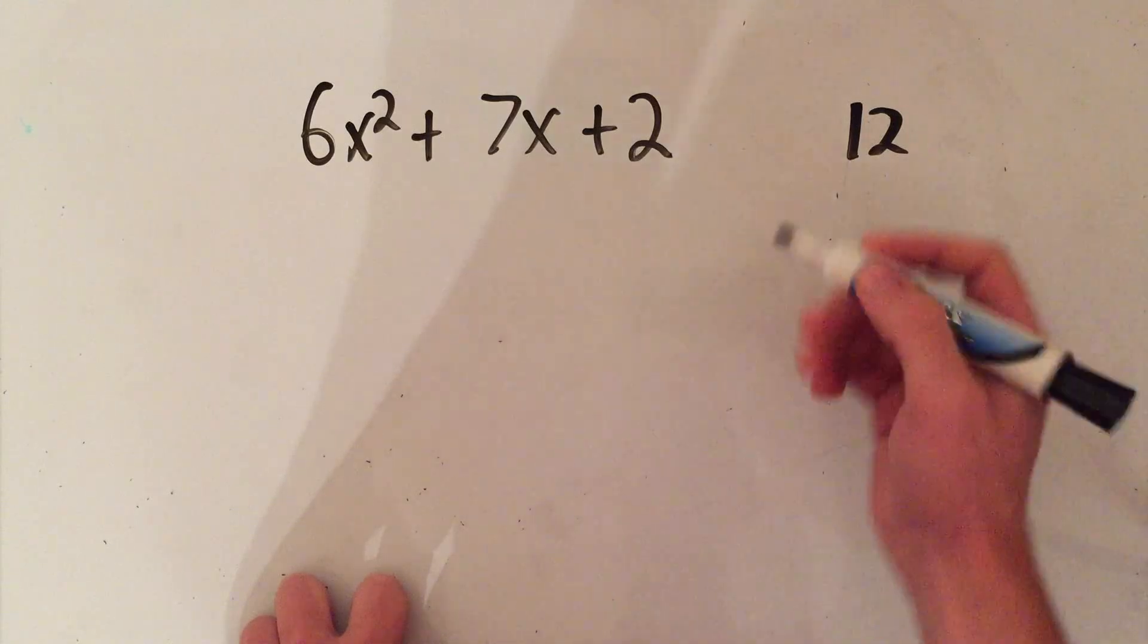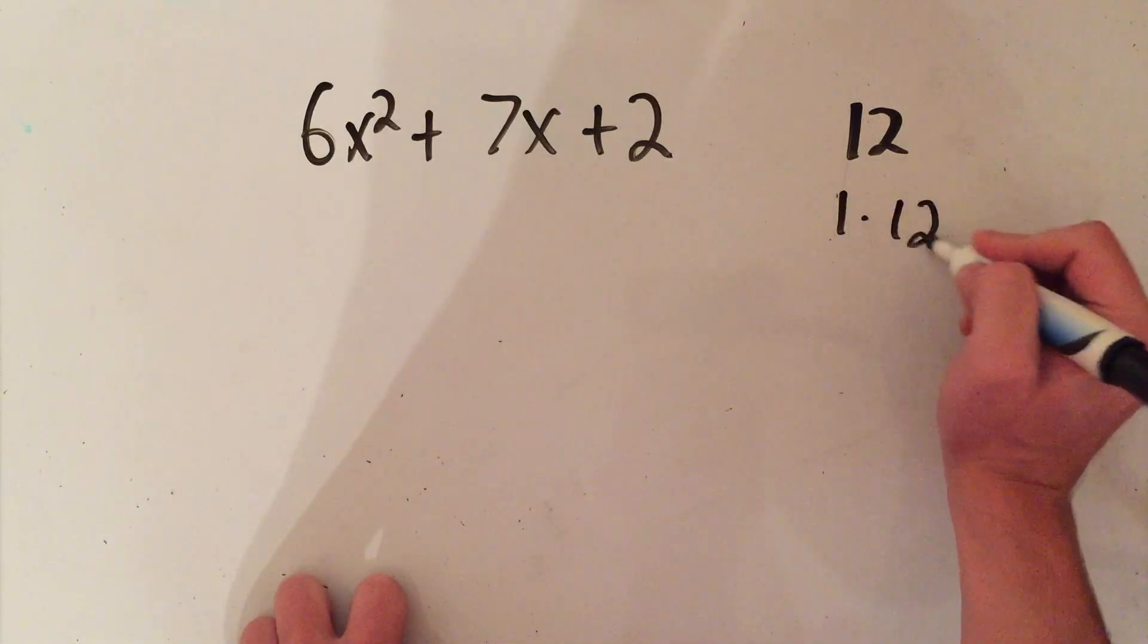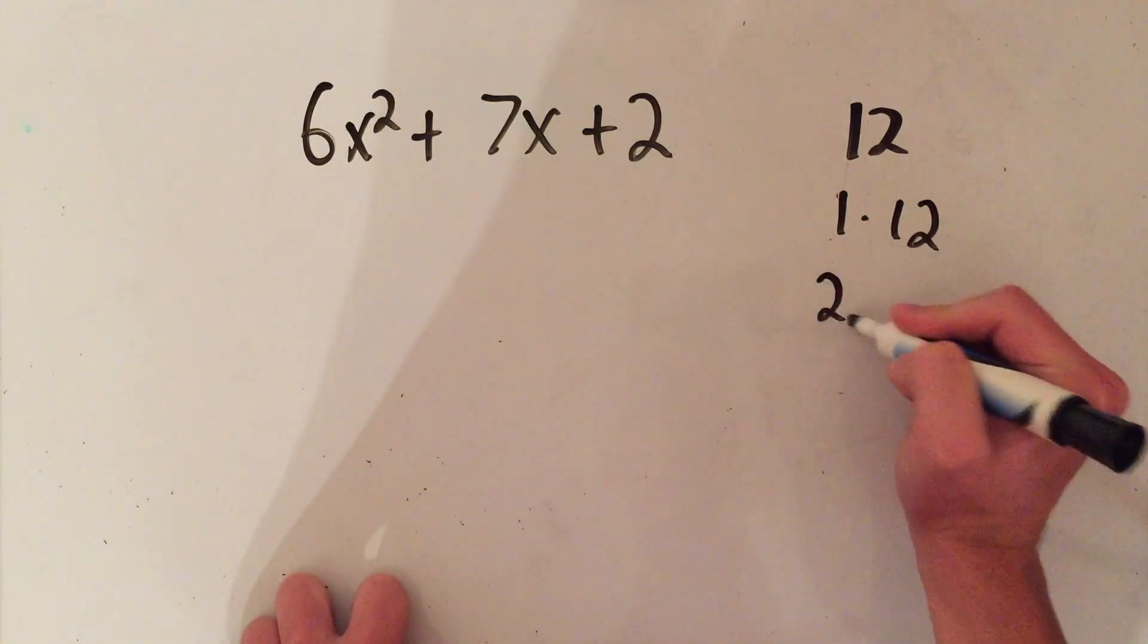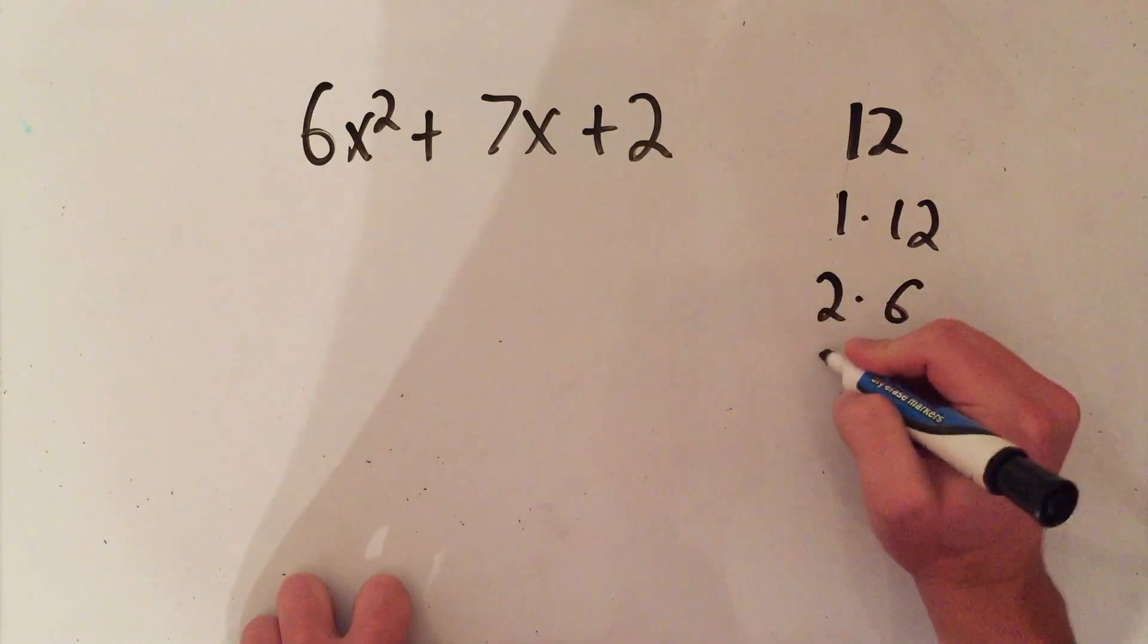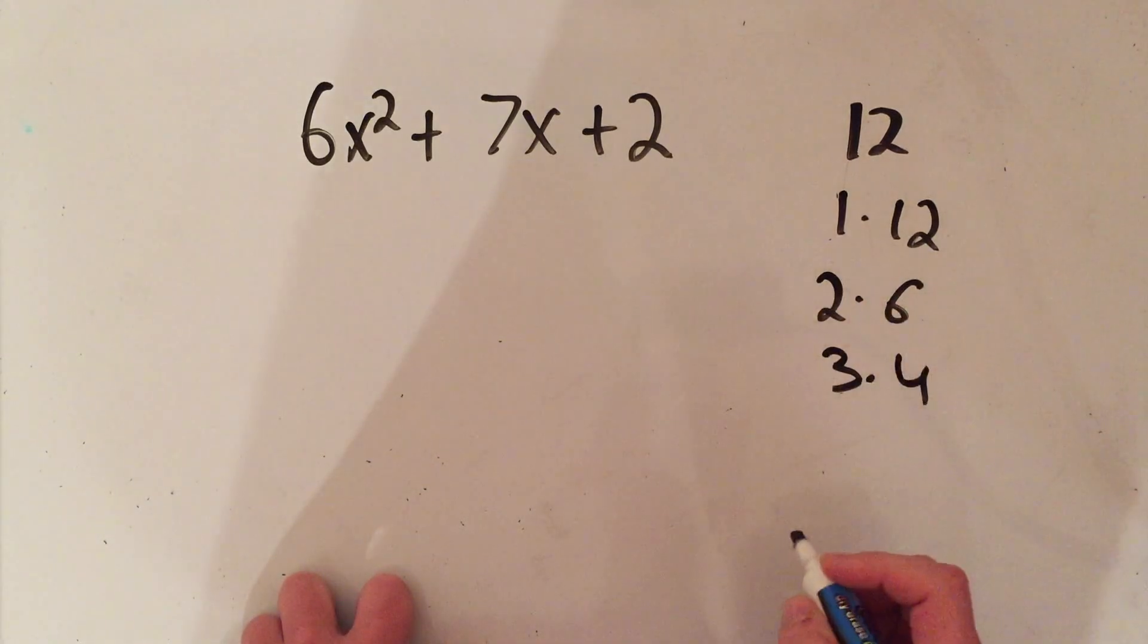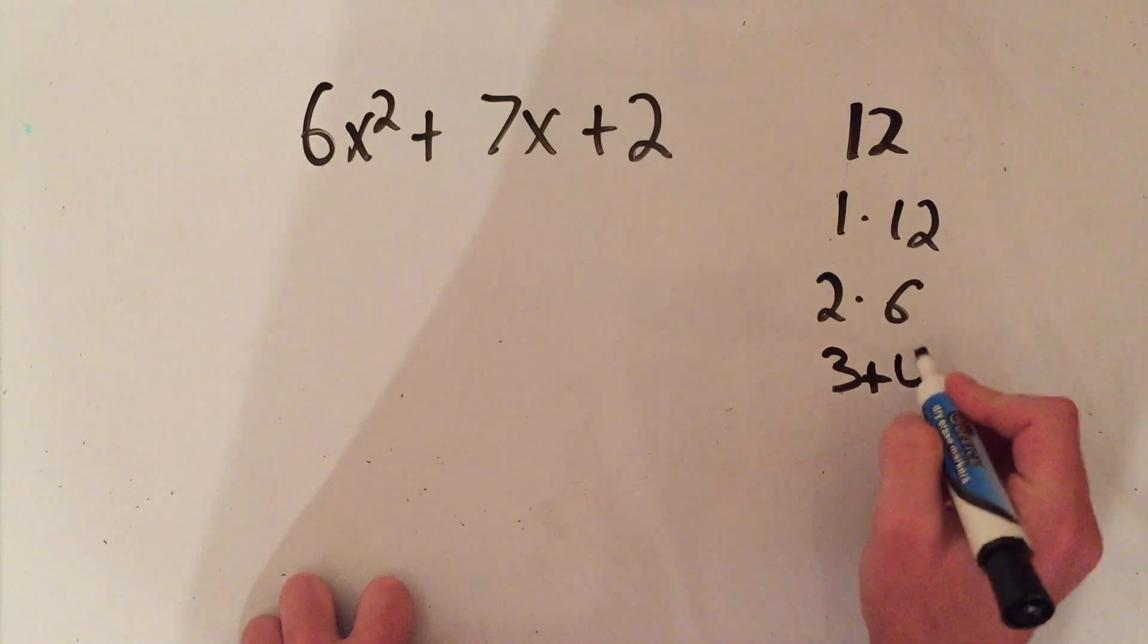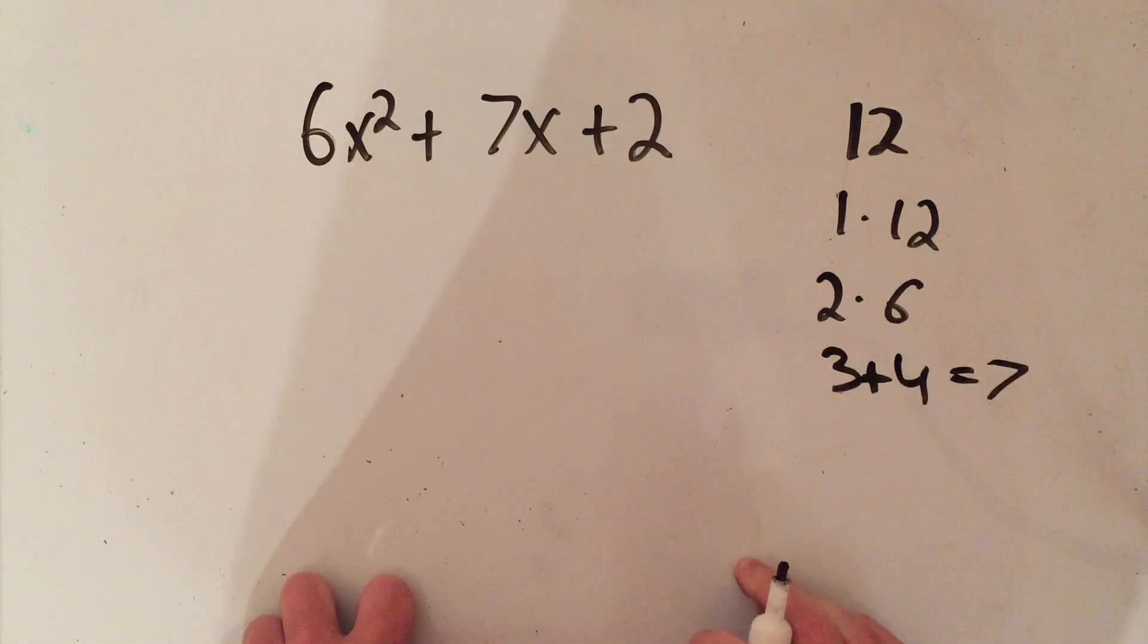Let's see, 12 is 1 times 12 - no, that doesn't work. 12 is also 2 times 6 - don't think so. 12 is 3 times 4. Hey, 3 plus 4, that's 7. Okay, that's what we're gonna go with.